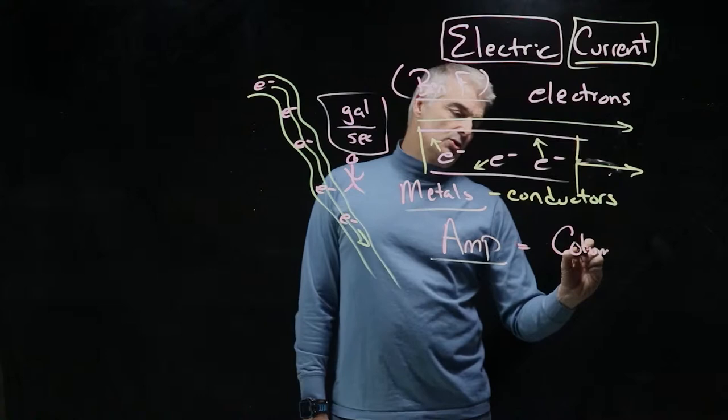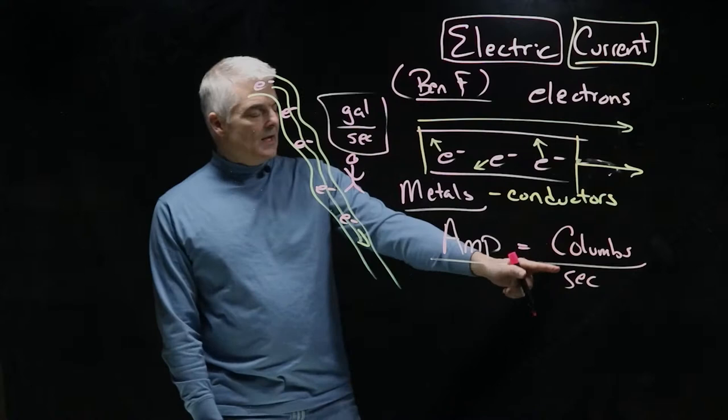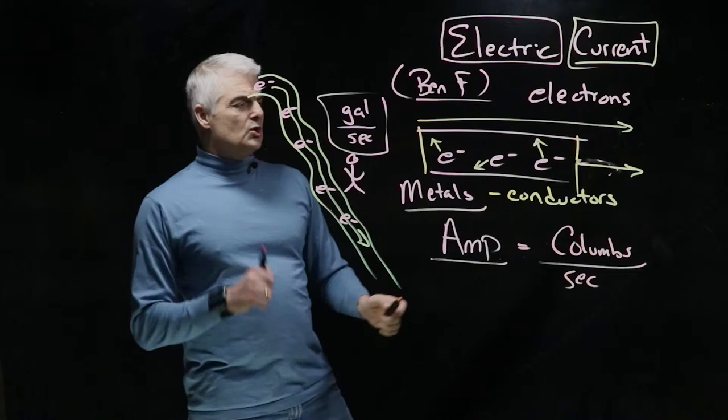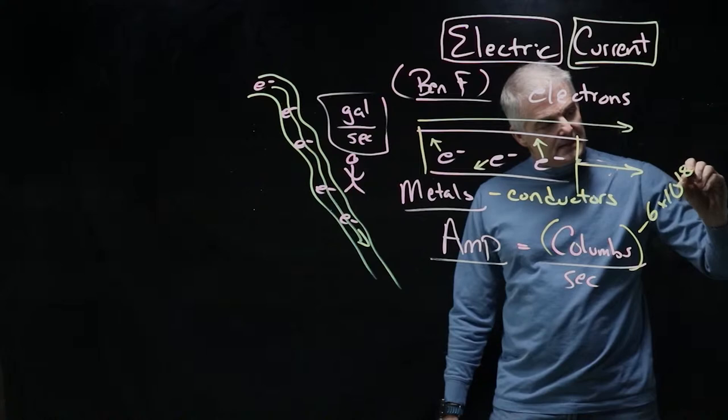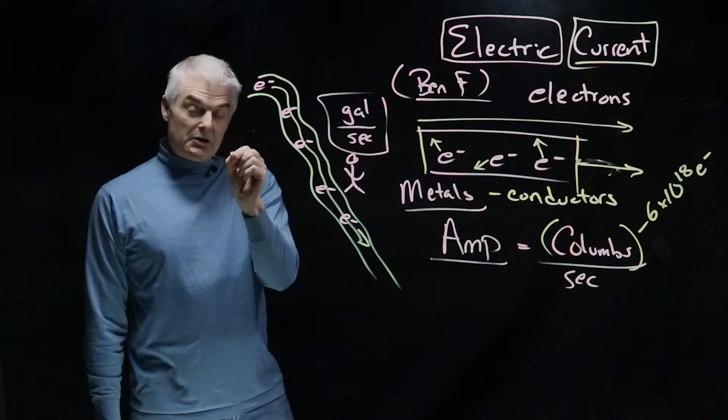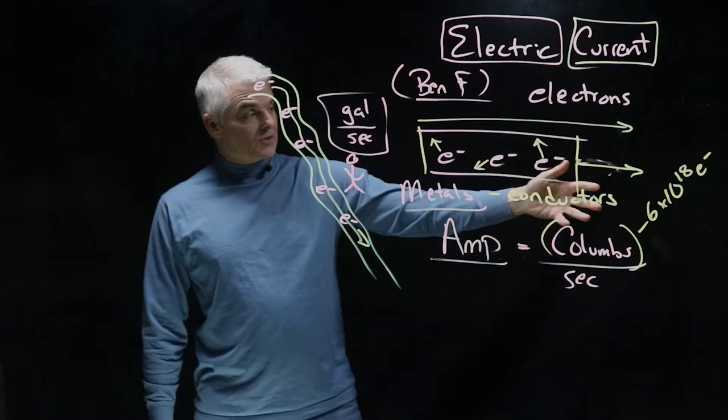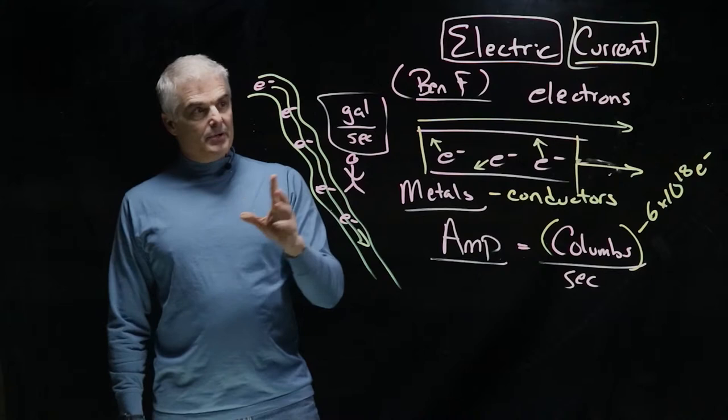And it measures the number of coulombs per second. Now wait a second, coulomb - there's a weird word. A coulomb is actually six times ten to the eighteenth electrons. So instead of gallons, we count one electron, two electrons, three electrons. There's so many of them, we count it in a huge number: six times ten to the eighteenth coulombs every second would be a one amp circuit.